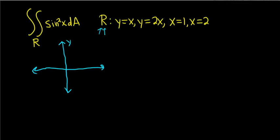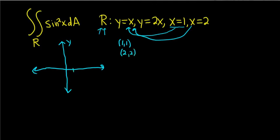This is a trapezoid, so the easiest way to sketch it correctly is to plug in these numbers into these functions. We're going to take 1 and plug it in here. So when x is 1, y is 1 — that means we have the point (1, 1). Then we'll plug in 2. So when x is 2, y is 2, so we have the point (2, 2). If you connect the dots, you get a straight line — that line is y equals x.